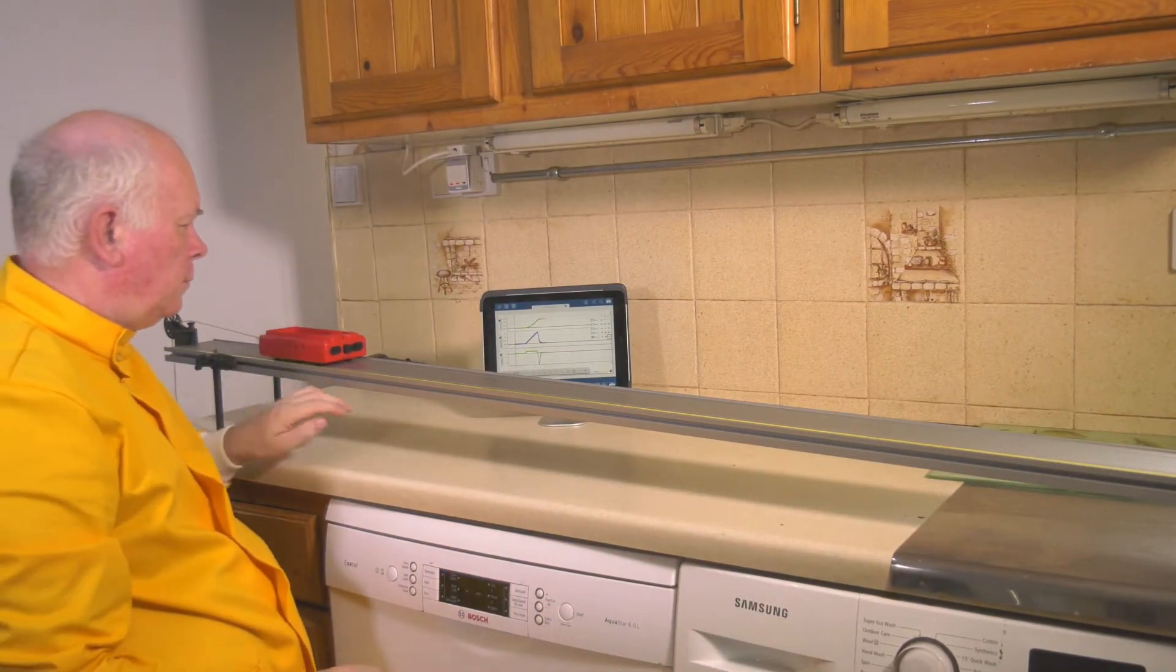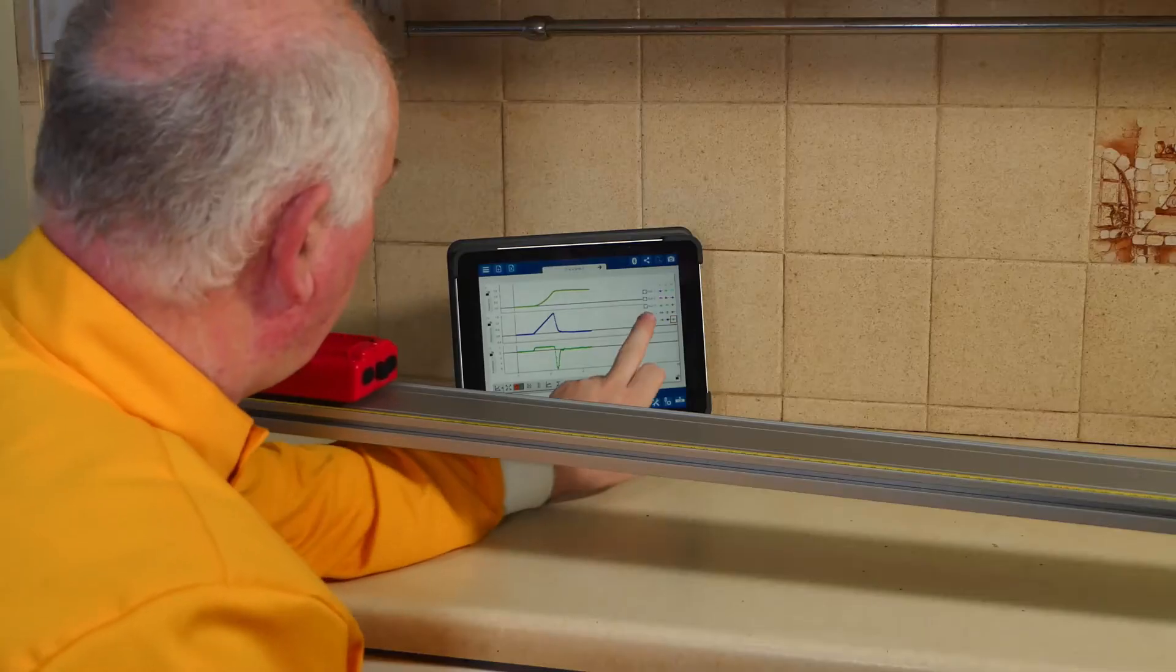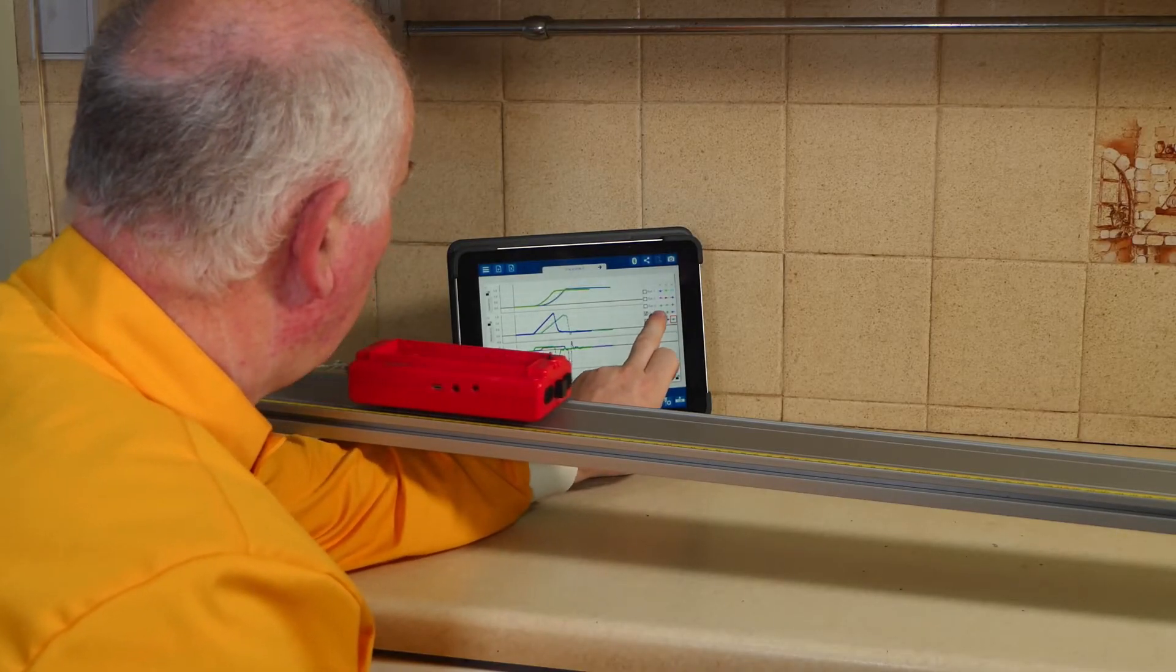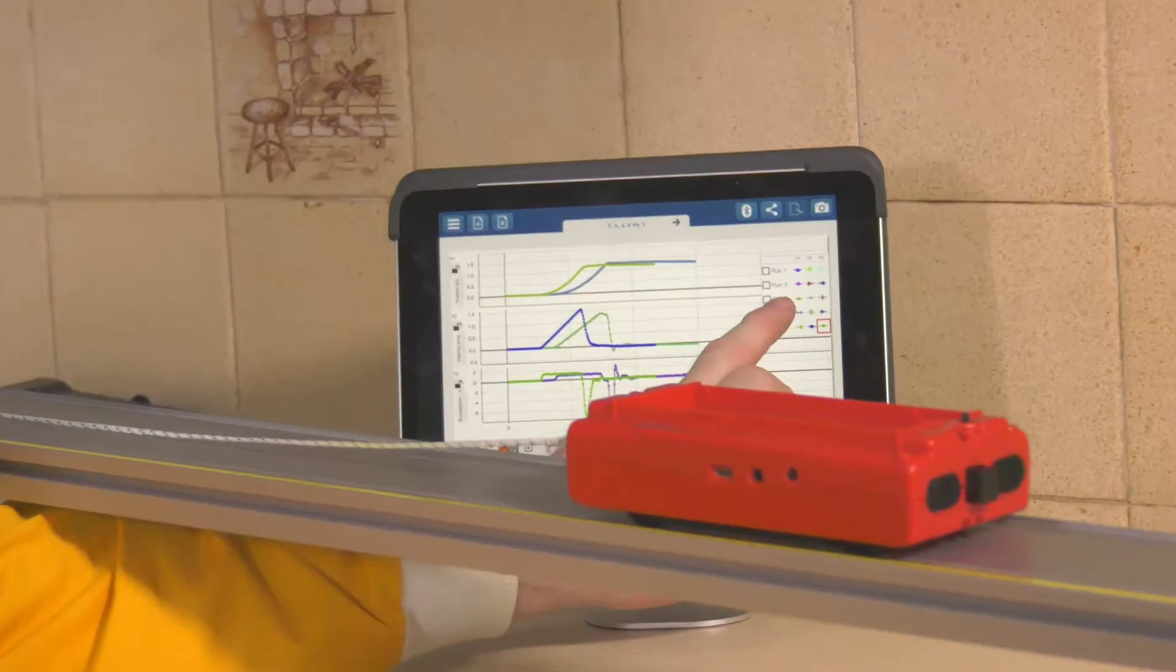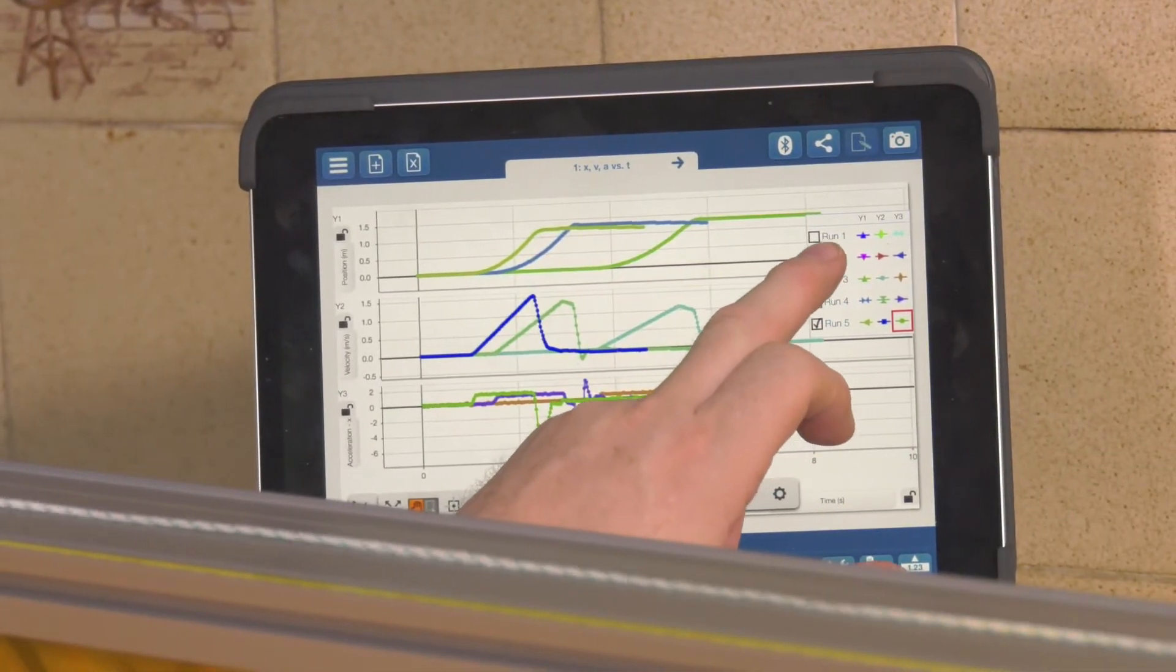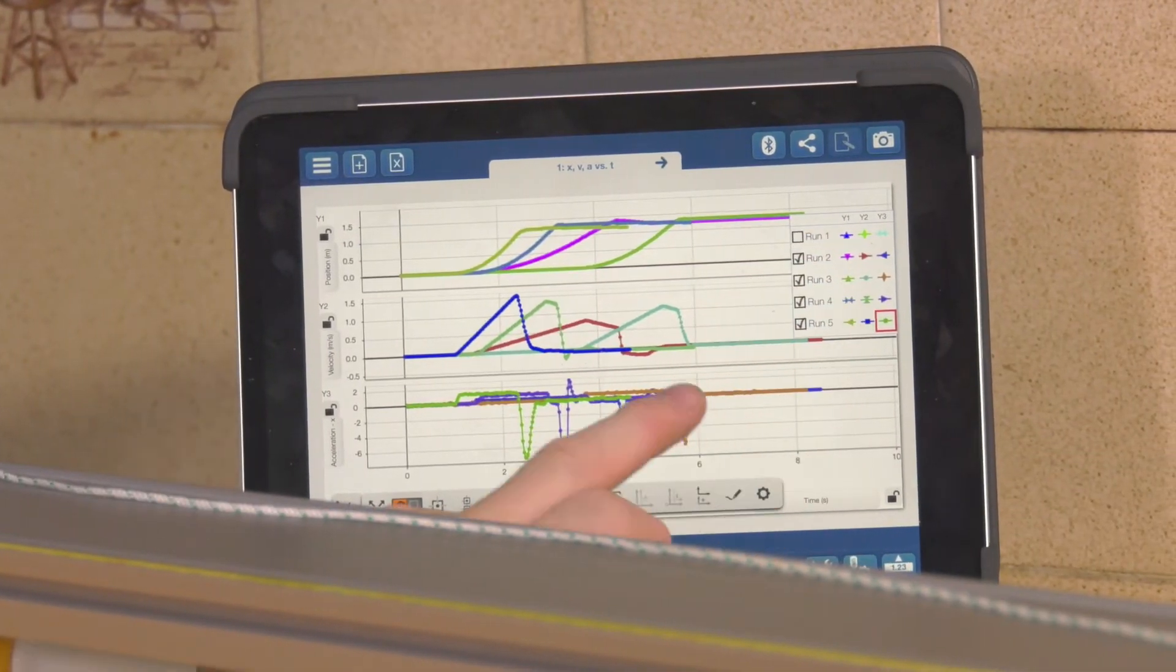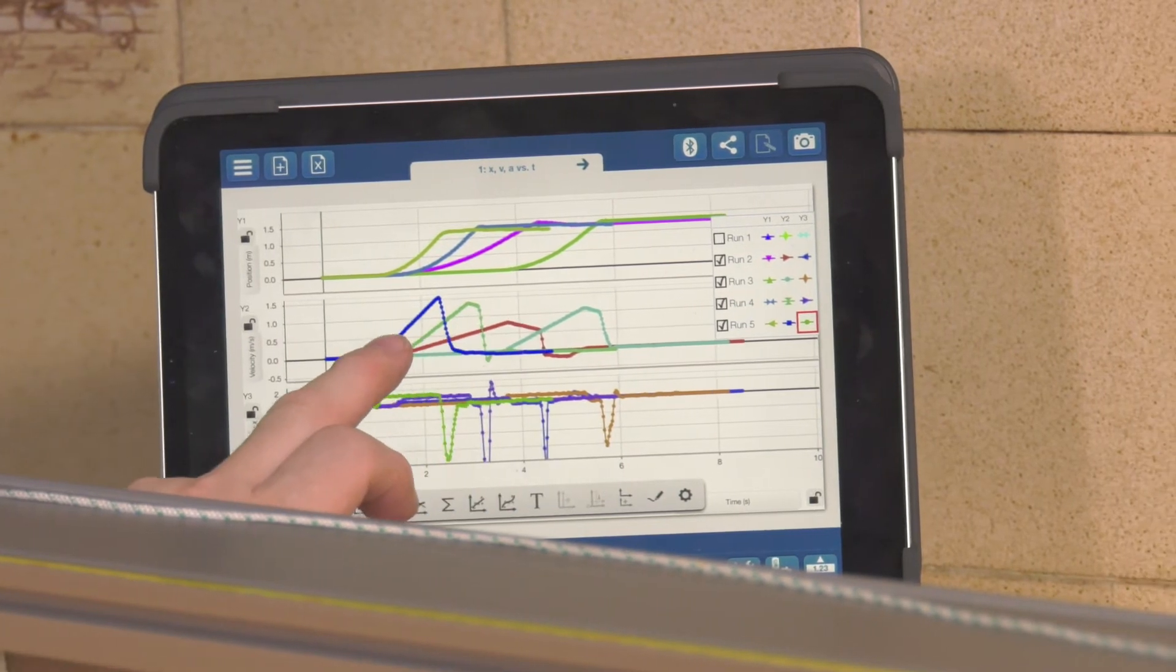And if we compare this run with the previous run and the previous run, we can see the lines for velocity are gradually getting steeper.